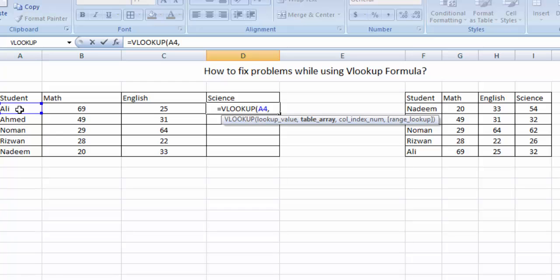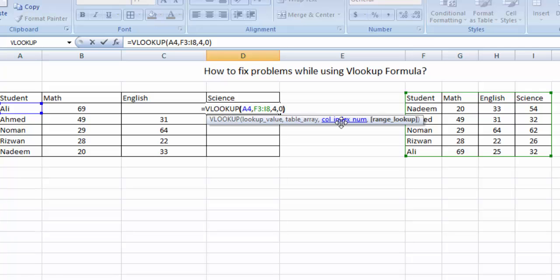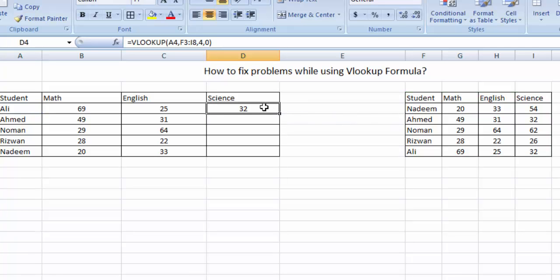VLOOKUP, comma, range, comma, fourth column, comma, zero, bracket close, enter. And now we will drag down and it will give again the same problem.